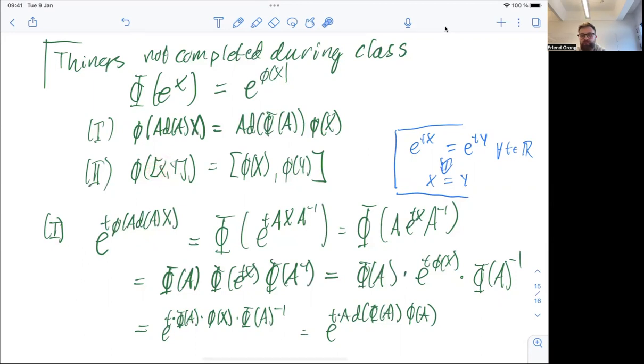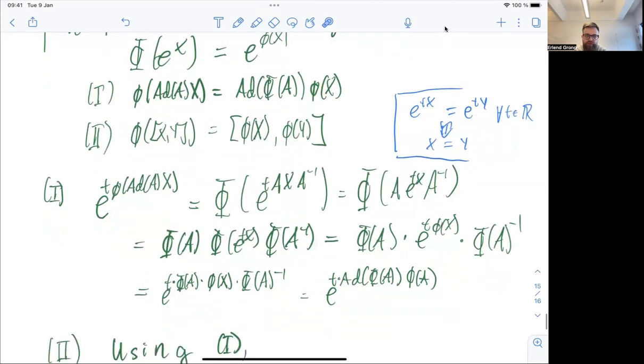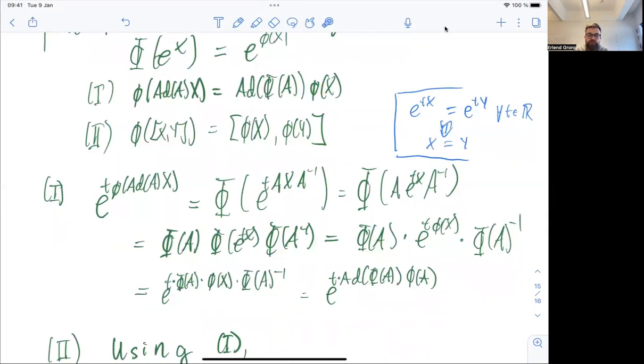Sorry, the algebra homomorphism, that is that the image of the bracket is the same as first taking, first taking the, applying phi to each x and y, and then taking the bracket.